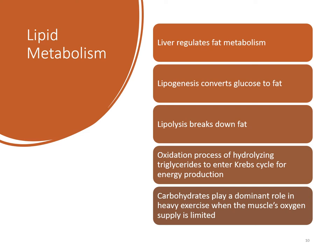Lipids are broken down in the small intestine, but the liver regulates fat metabolism. Lipogenesis converts glucose to fat. Lipolysis — any time you see 'lysis' it means breakdown — breaks down fat. The oxidation process of hydrolyzing triglycerides allows them to enter the Krebs cycle for energy production. Fats are broken down into glycerol and fatty acids, and those fatty acids are turned into acetyl-CoA.